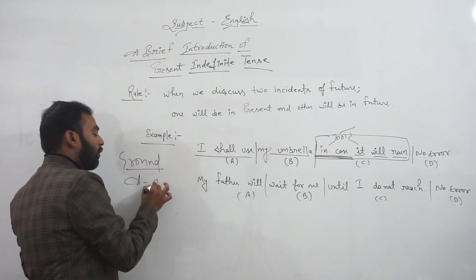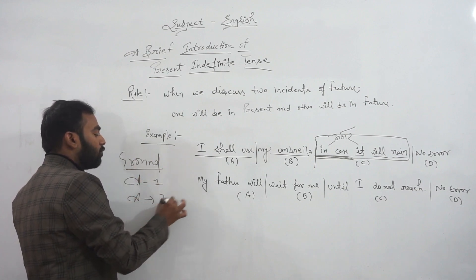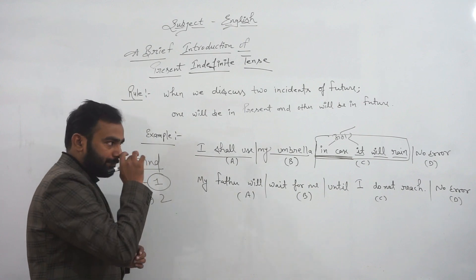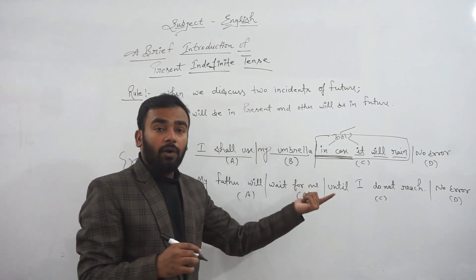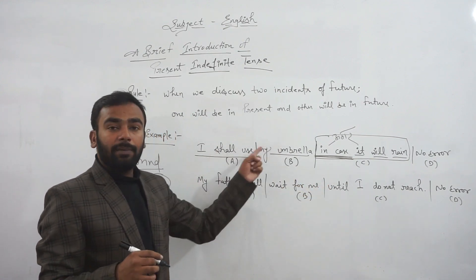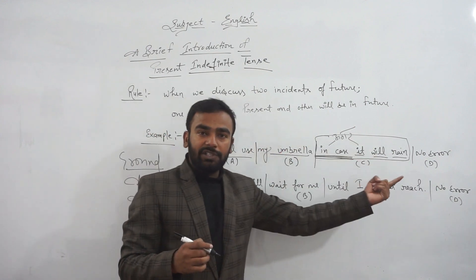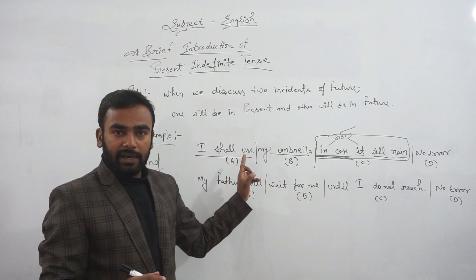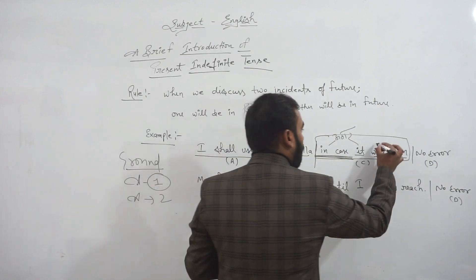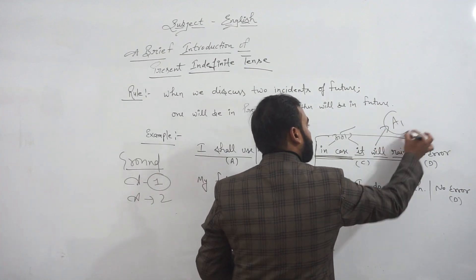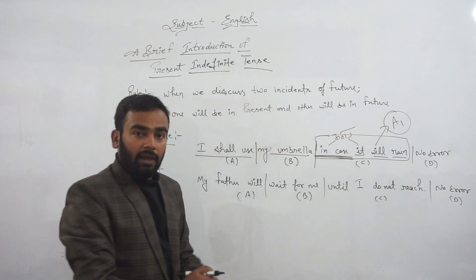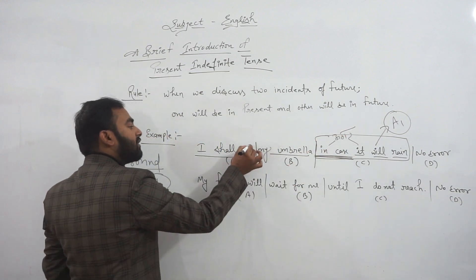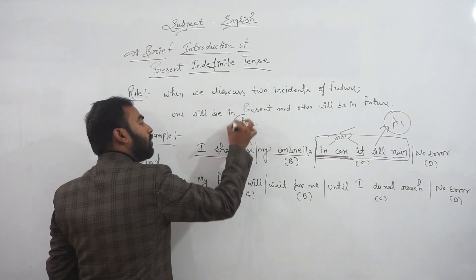On the ground, one is action one and one is action two. What is action one? When will he use his umbrella? For that, rain must happen. The condition is that when it rains, then umbrella will be used. So action one becomes 'it will rain'. Only when this happens can action two happen, which is use of umbrella.